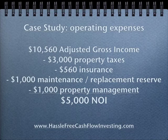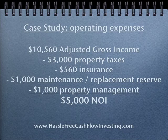You would take the AGI — adjusted gross income — and you would subtract all of your operating expenses from that, and the result is your annual net operating income.